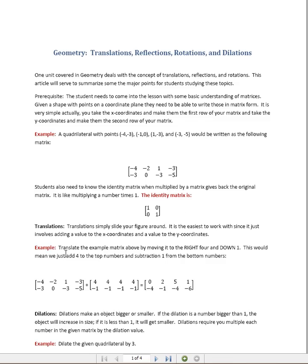The first topic is translations, and a translation is simply a slide. It just slides your figure around the coordinate plane, moving it up and down and left and right. An example would be to take our matrix here, our quadrilateral, and move it or slide it so that it would go 4 units to the right and 1 unit down.